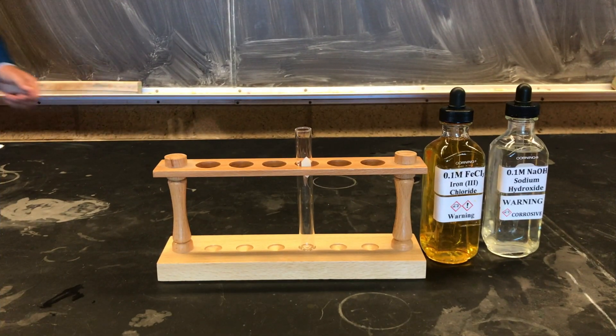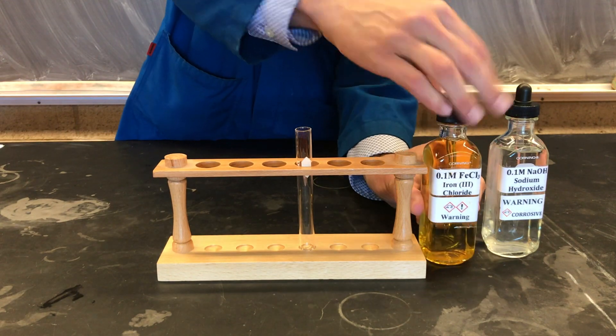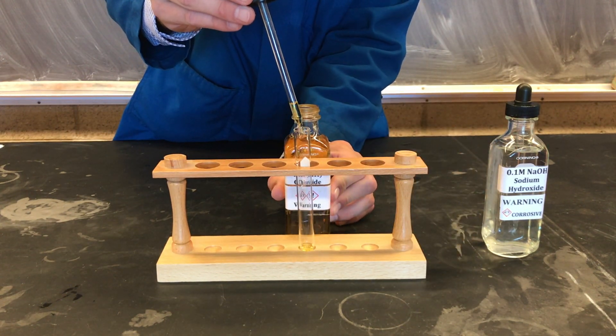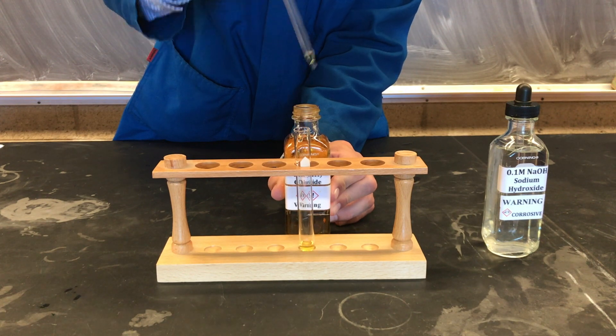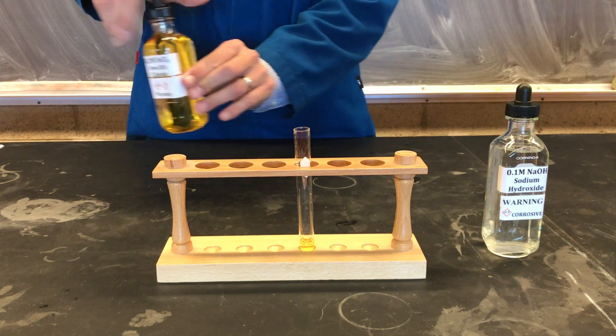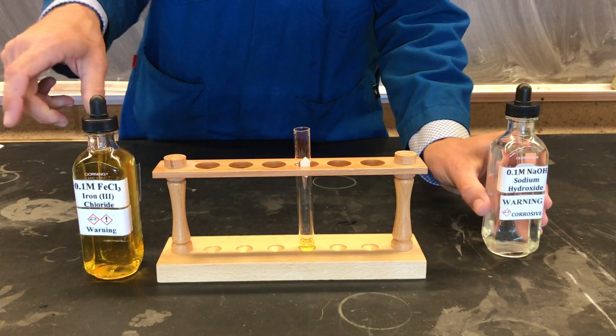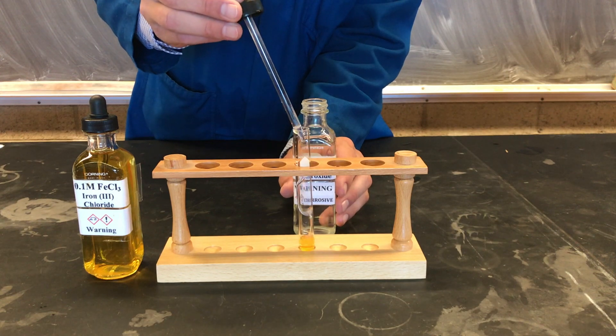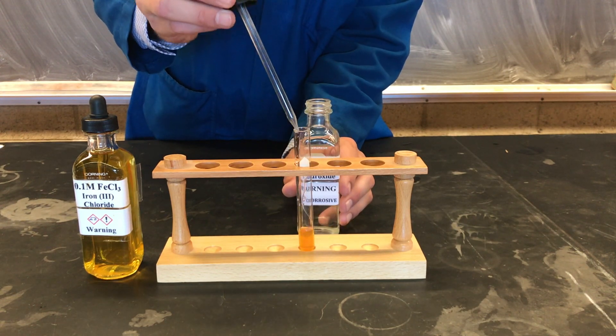In this reaction, we're going to be mixing 20 drops of aqueous iron chloride with 20 drops of aqueous sodium hydroxide solution.